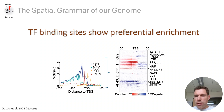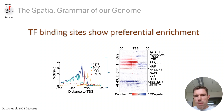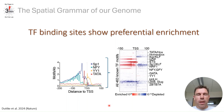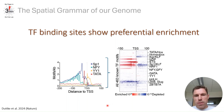Considering each transcription start site within a promoter or enhancer, we found that many transcription factor binding sites — such as SP1 here, or globally for all sites — occur in highly preferred positions relative to the transcription start sites, often with a 10-base-per-helical-turn periodicity.